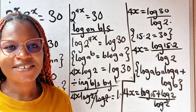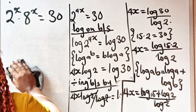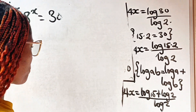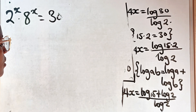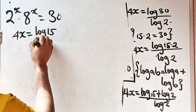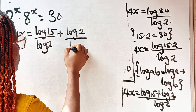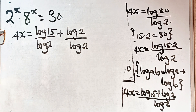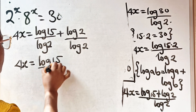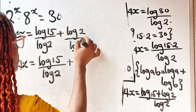We are close to the answer, but remember the most interesting aspect of this video is the proof. Moving forward, let's distribute the denominator: 4x is equal to log 15 over log 2 plus log 2 over log 2. So we have 4x equal to log 15 divided by log 2, plus 1, since log 2 divided by log 2 equals 1.